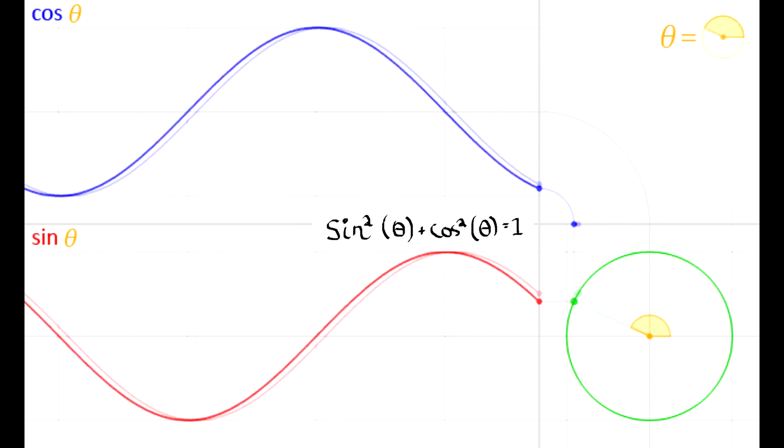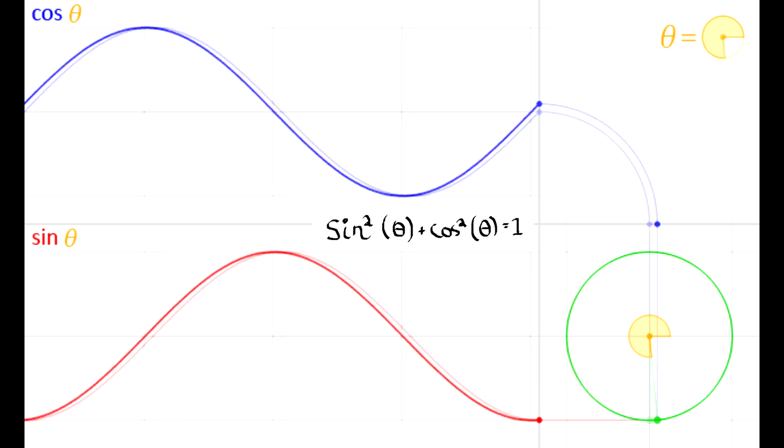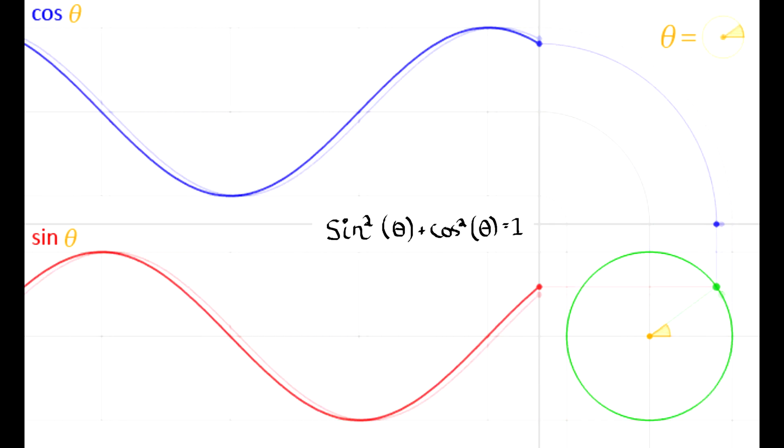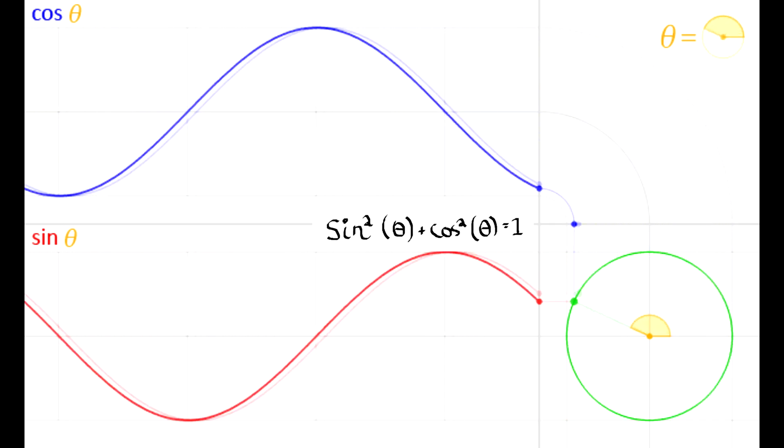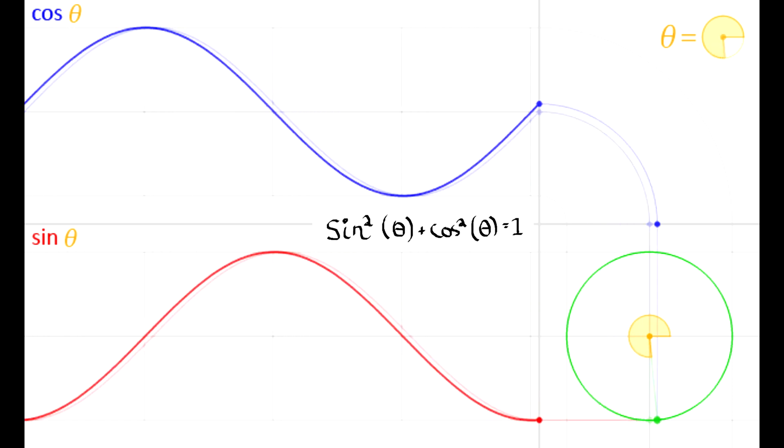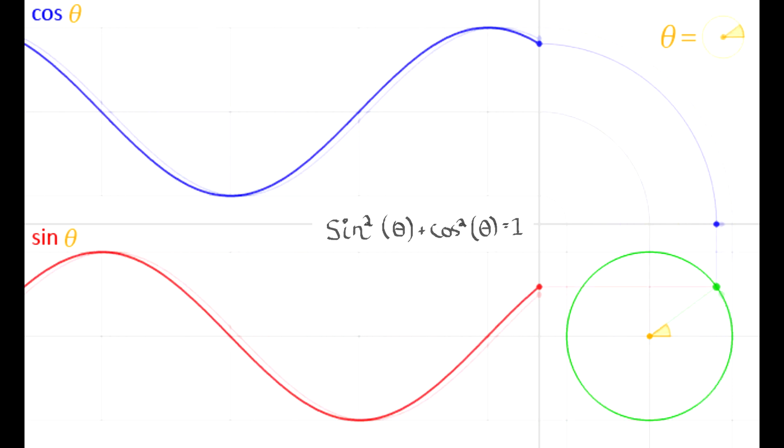In this animation, the green circle in the bottom right represents the sum of the magnitudes of sine and cosine. If you're unfamiliar with this concept, I would advise looking more into sine and cosine functions and then coming back to this video.